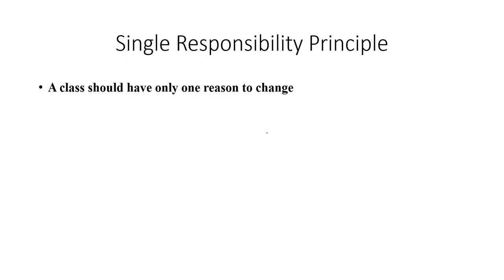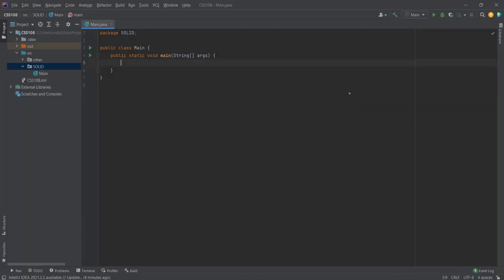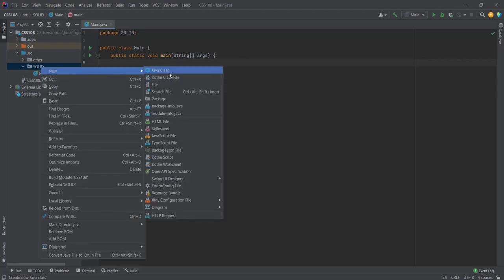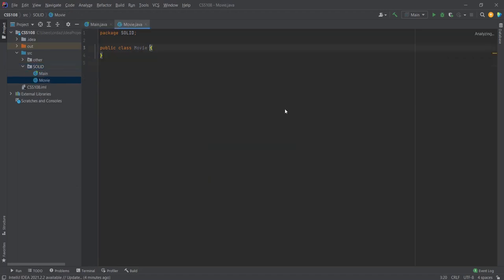The first principle is Single Responsibility Principle. It says that a class should have only one reason to change — a class should be responsible for only one job. Let's demonstrate this with a class called Movie that stores all the information about a movie.